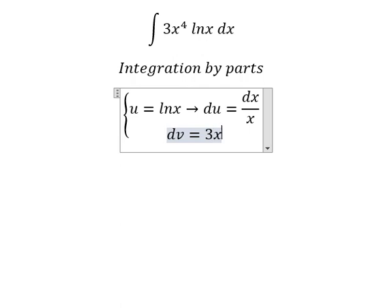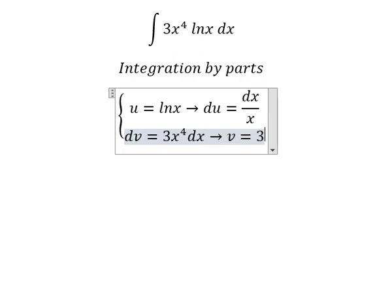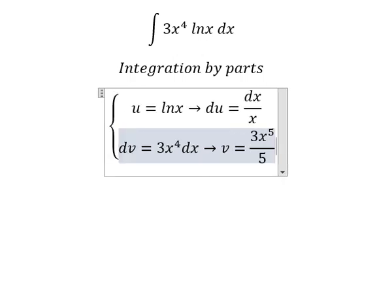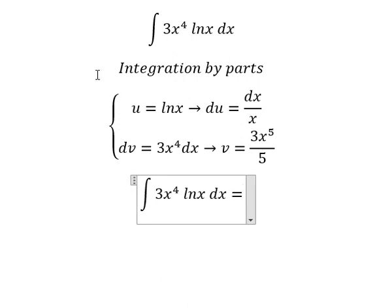dv is 3x to the power of 4 dx, so the integration of this gives us v equals 3x to the power of 5 over 5. We have u multiplied by v.